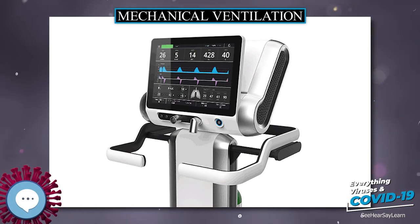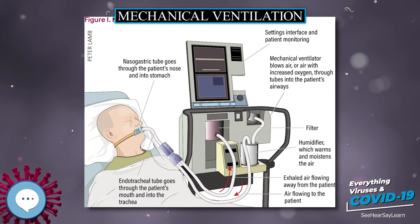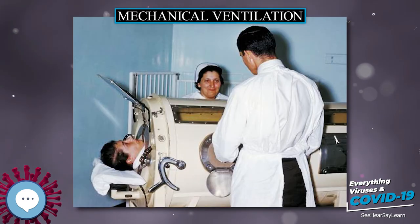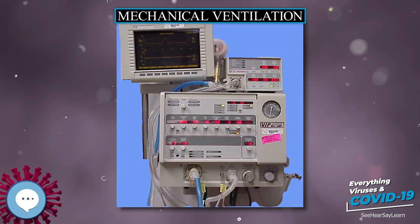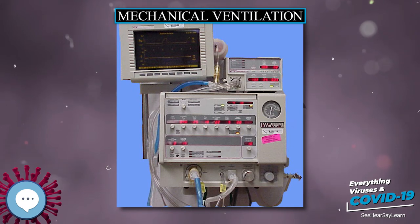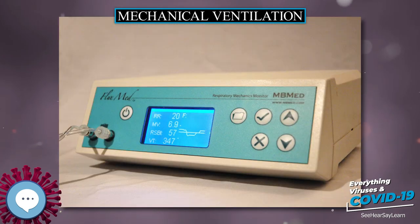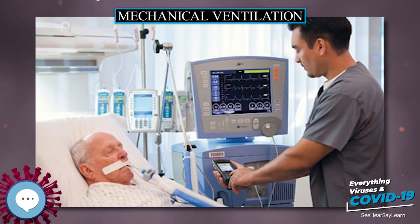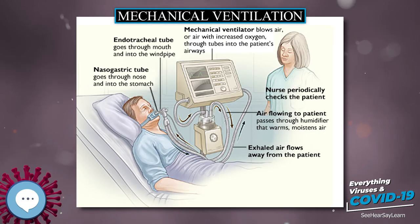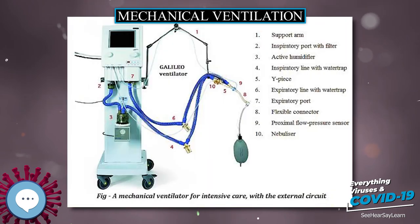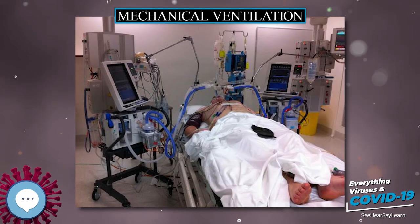The trigger is what causes a breath to be delivered by a mechanical ventilator. Breaths may be triggered by a patient taking their own breath, a ventilator operator pressing a manual breath button, or by the ventilator based on the set breath rate and mode of ventilation. The cycle is what causes the breath to transition from the inspiratory phase to the exhalation phase. Breaths may be cycled by a mechanical ventilator when a set time has been reached, or when a preset flow or percentage of the maximum flow delivered during a breath is reached. Breaths can also be cycled when an alarm condition such as a high pressure limit has been reached, which is a primary strategy in pressure-regulated volume control.